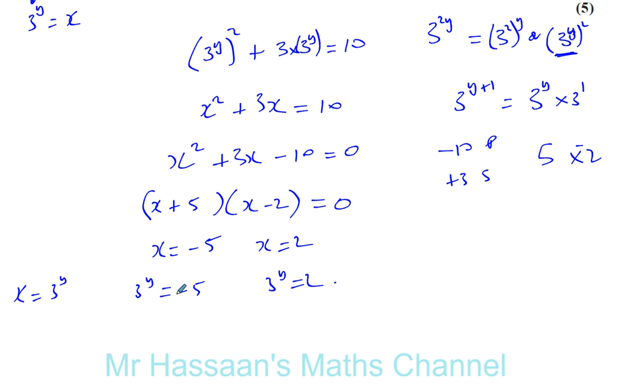Now, 3 to the power of y equals negative 5. There will be no solution for this. An exponential equation will never ever hit 0 and this axis here.